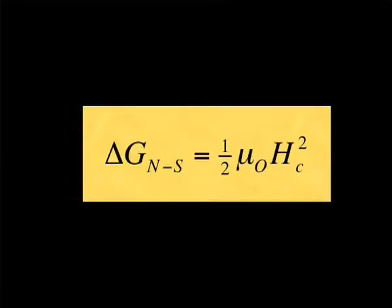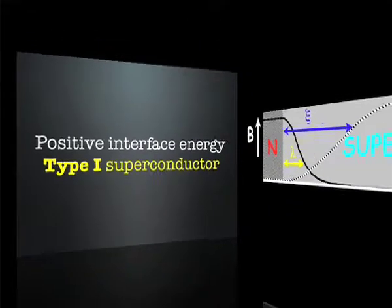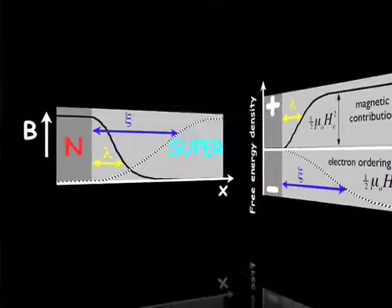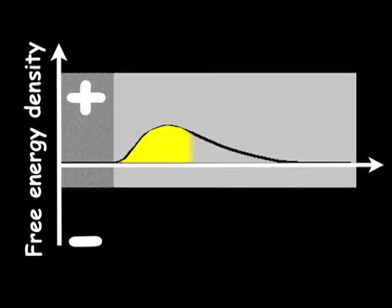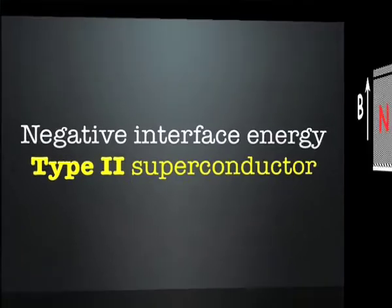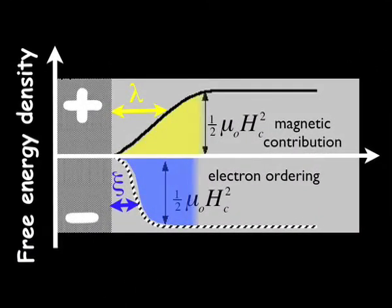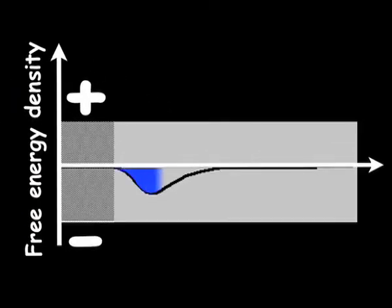We have this expression for the surface energy, and whether this surface energy is positive or negative depends upon which is larger. For Type 1 superconductors, psi is always greater than lambda. But if psi were to be less than lambda, then the surface energy becomes negative, and the superconductor might well split into normal and superconducting regions.